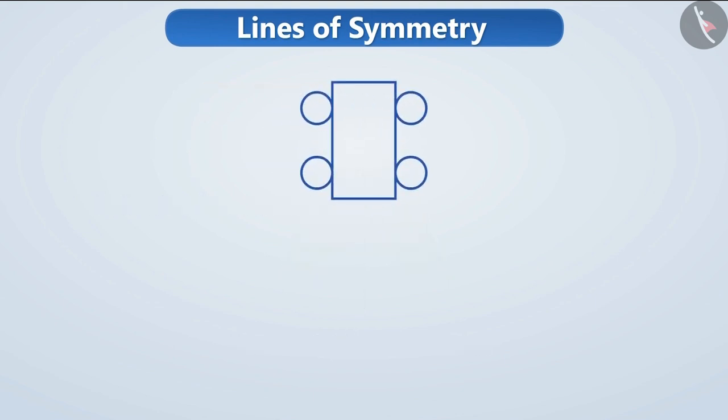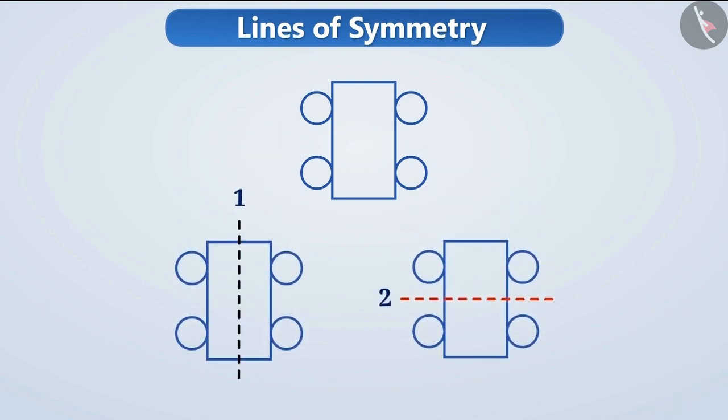Look at this figure. Is there any line of symmetry present here? Think for a while. Correct. Here we can see two lines of symmetry. And, apart from these, no other lines could be detected.